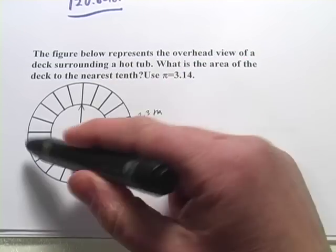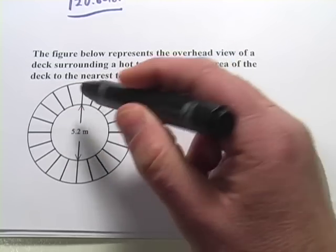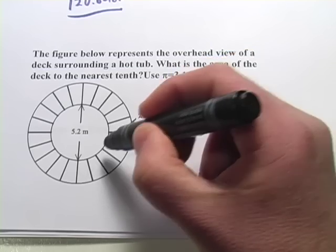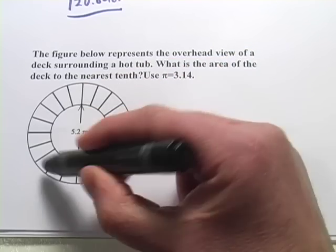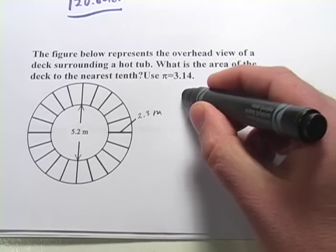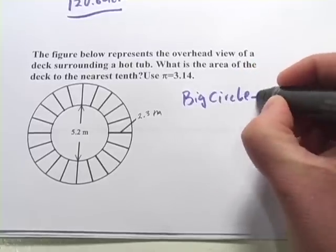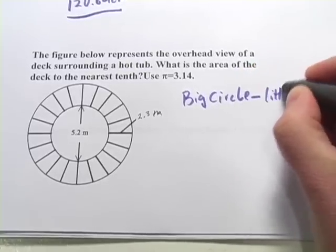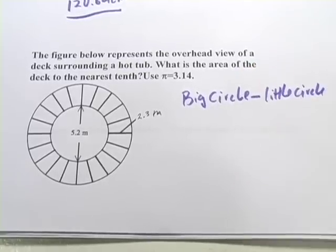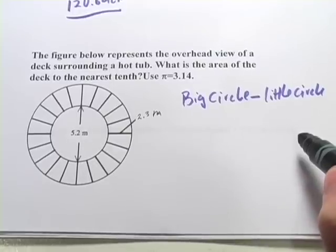What you've got going on here really are two circles: a big outer circle and then an inner circle. And we want to get this sort of donut area. And that would be the big circle minus the little circle. So we'll figure the areas of both of those and then we'll do that subtraction.